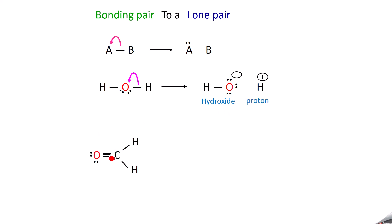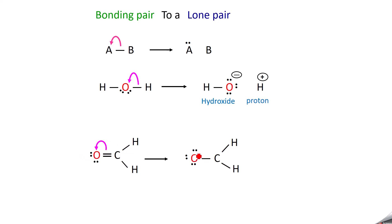In another example with the hydroxide ion and a proton: one bond of the C=O double bond is shifted to oxygen, so the double bond becomes a single bond between carbon and two hydrogens, and the shifted bonding pair becomes a lone pair on oxygen. Now oxygen has three lone pairs, giving it a negative charge, and carbon has only three valences, giving it a positive charge.